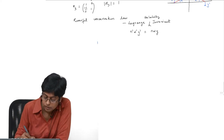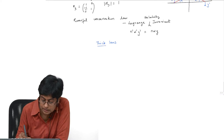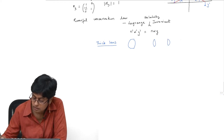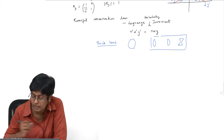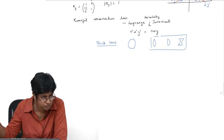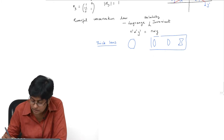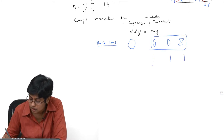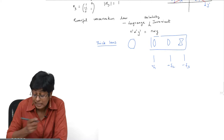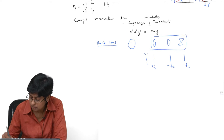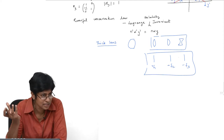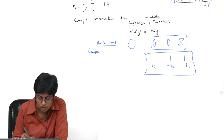A thick lens does not just mean a lens whose thickness I cannot ignore. It can also mean I have a lens system and I want to consider it as one lens. I could even take a system with a number of thin lenses — plus f1, plus f2, minus f3 — and while each individual lens is thin, together the system plus the distances can be considered as a thick lens, or a compound lens.